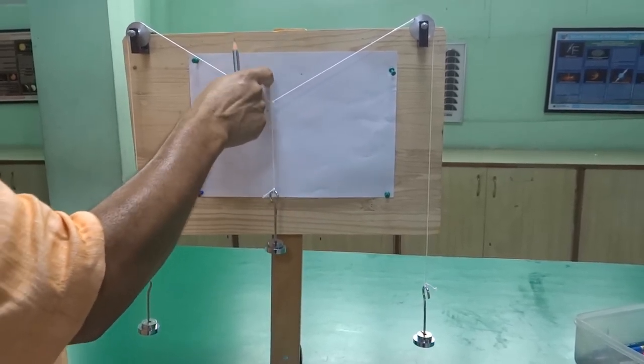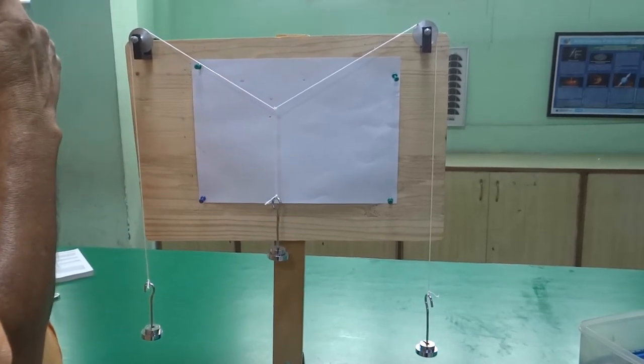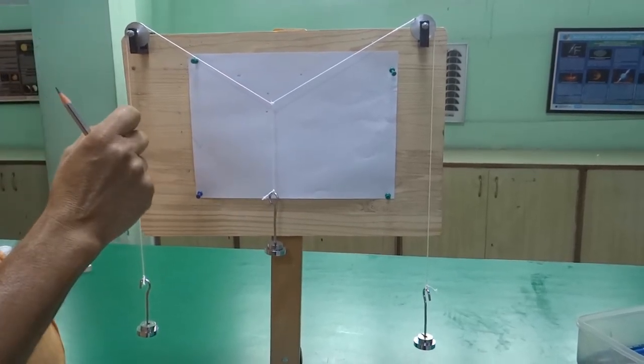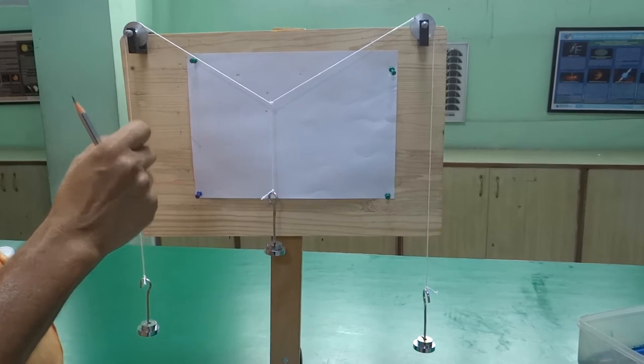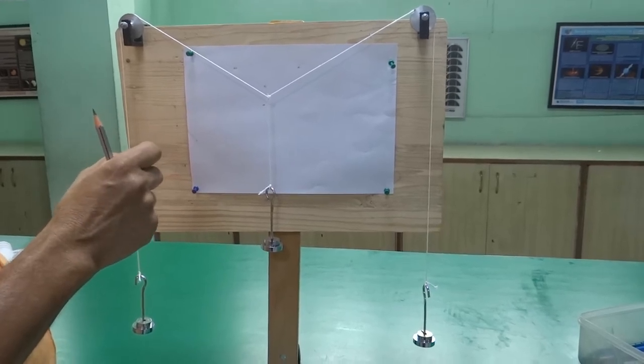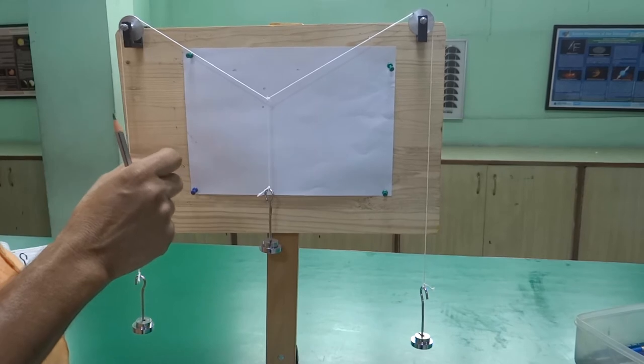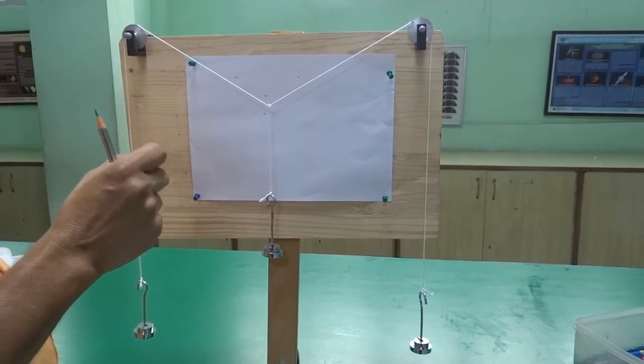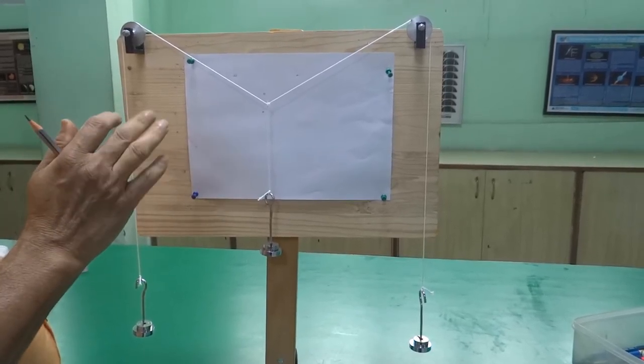Draw parallelogram. Find the resultant theoretically by choosing appropriate scale. And from this scale, you can calculate the magnitude of mass of unknown body. Mass or weight of unknown body both can be calculated. Because there is only a difference of g.